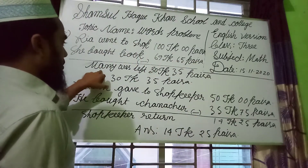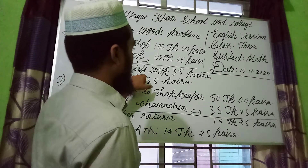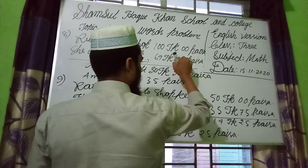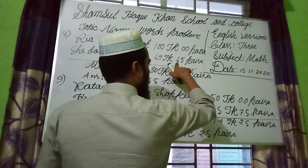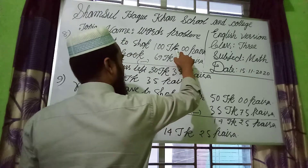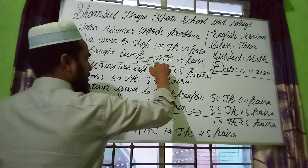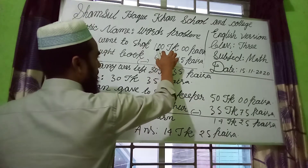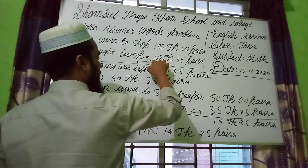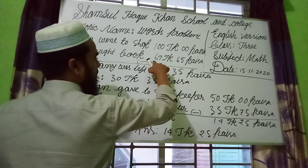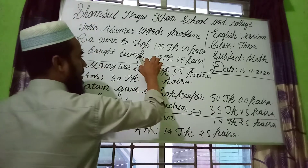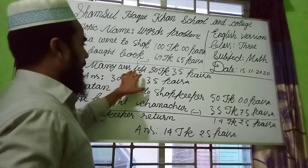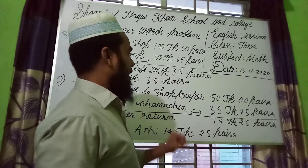Money left calculation: 5 deducted from 10 is 5, carry 1. 6 plus 1 is 7, deducted from 10 is 3, carry 1. 1 plus 9 is 10, deducted from 10 is 0, carry 1. 1 plus 6 is 7, deducted from 10 is 3, carry 1. 1 deducted from 1 is 0. Money left is 30 Taka and 35 Paisa.